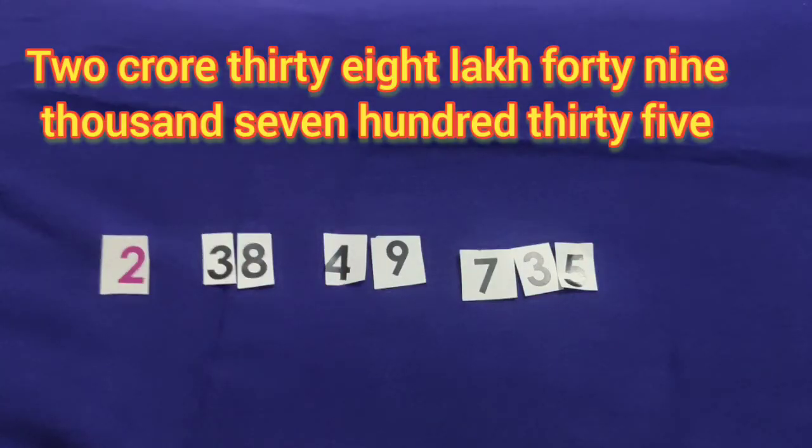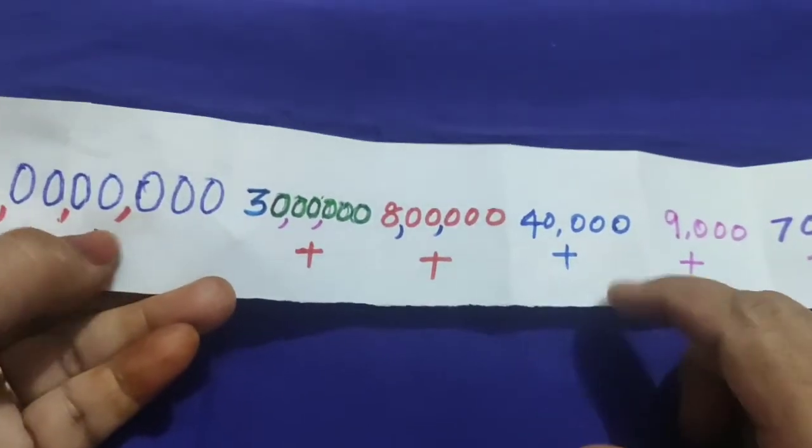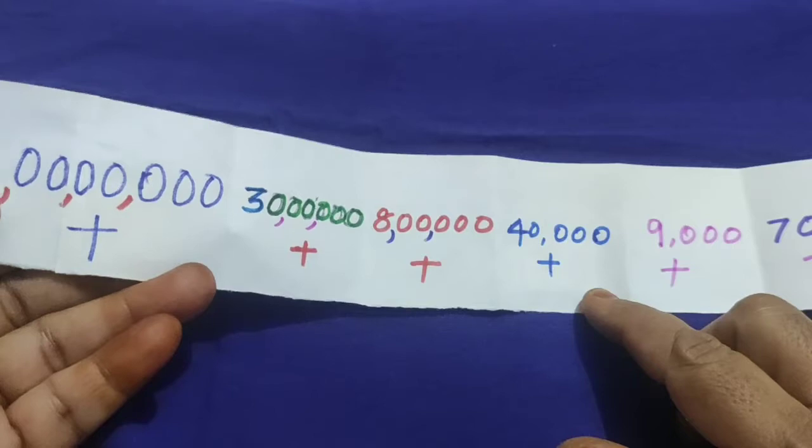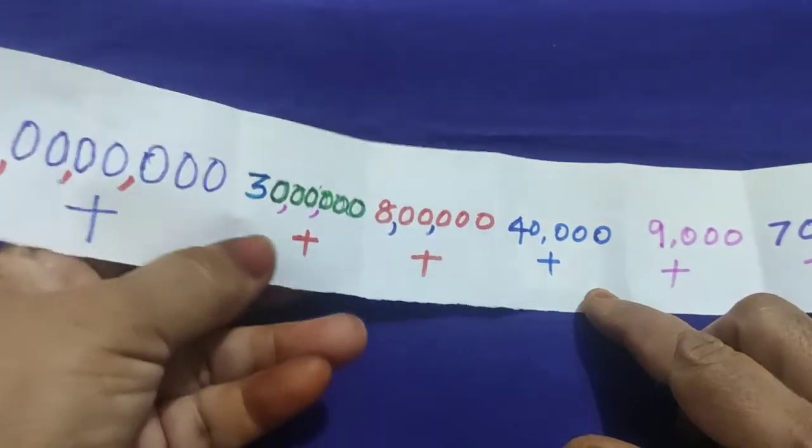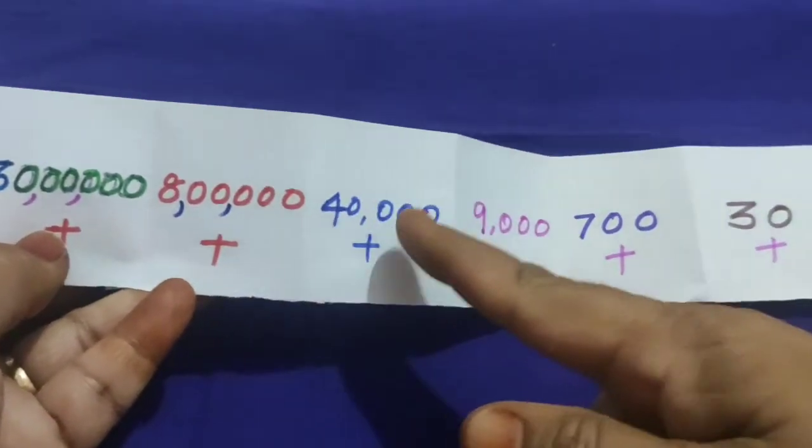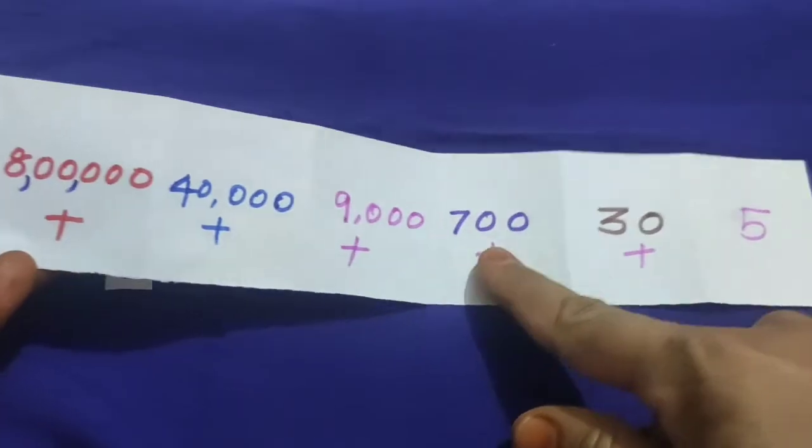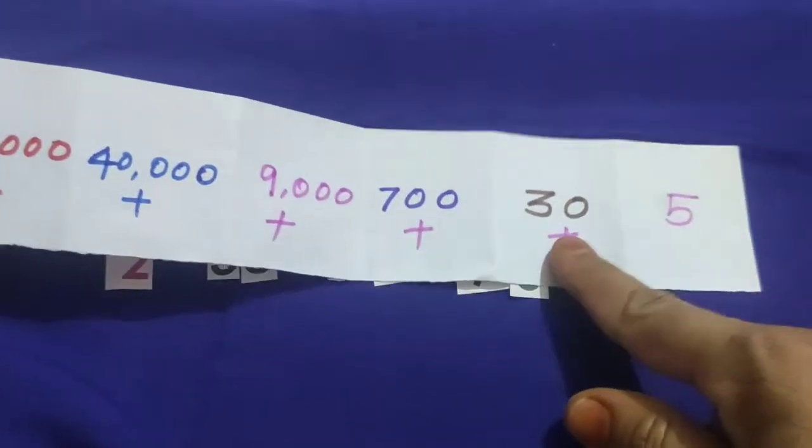First box, I had written 2 crore, then 30 lakhs, then 8 lakhs, then 40,000, then 9,000, then 700, then 30, then 5. Each and every box, the teacher has written the number separately.